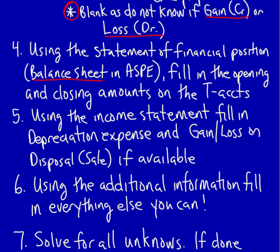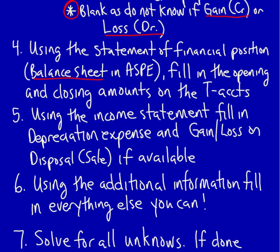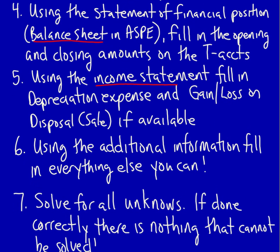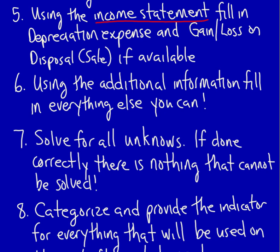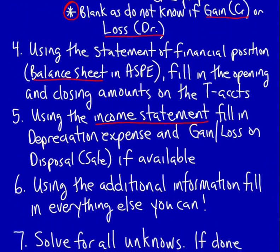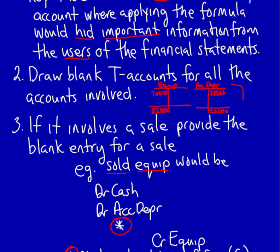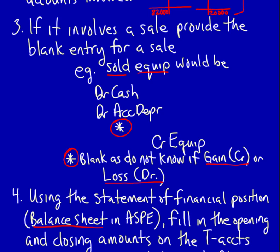Number five: using the income statement, fill in the depreciation expense if available and the gain or loss on disposal or sale if available. If those amounts are not available, you'll need to look elsewhere. Number six: using the additional information, fill in everything else you can — the additional information will always give you something. Remember, you are filling in information for the T-accounts and for the journal entry, which applies not just to property, plant and equipment but to anything relevant.